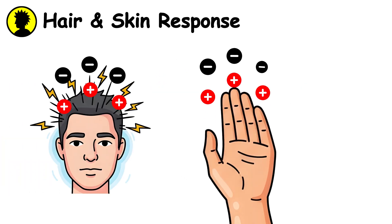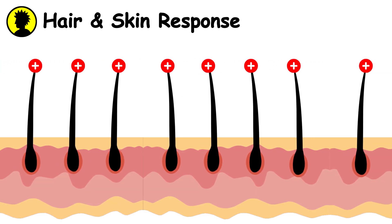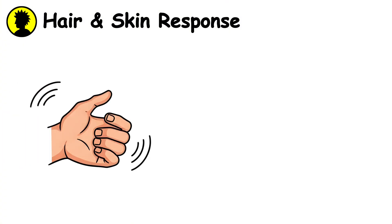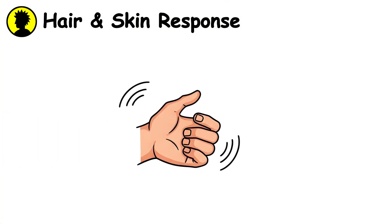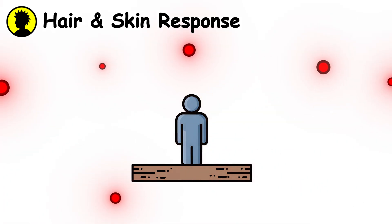Human hair and skin respond quickly to this charge. Each strand acts like a tiny antenna reacting to the field's pull. You might also feel a tingling sensation on your skin, especially on your arms or head. This is caused by ions moving across your skin, trying to balance the electrical difference between you and the air.